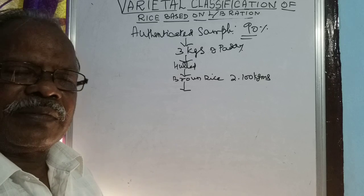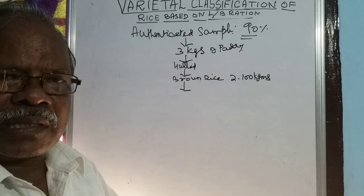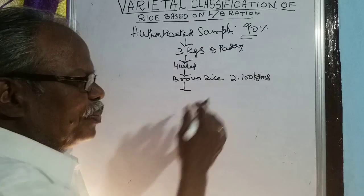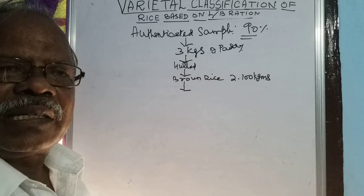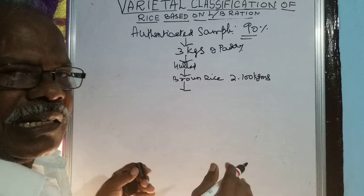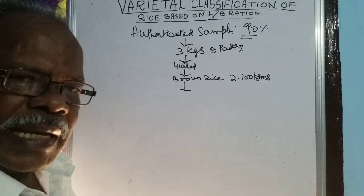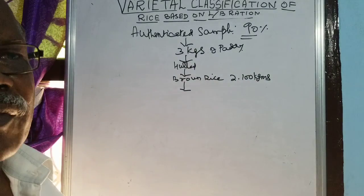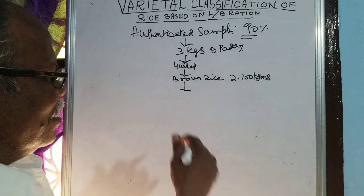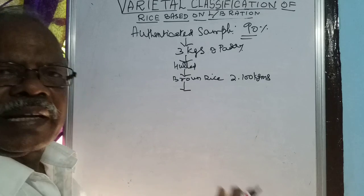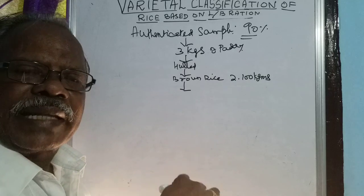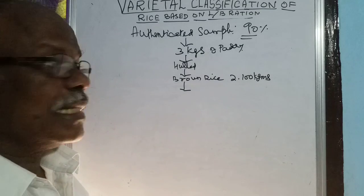A sample divider is a device which divides the sample equally in all its fractions. It will divide into two halves — if you put 2,100 grams, it will make 1,050 grams in each part. Again dividing 1 kg gives approximately 500 grams. This way we obtain a 500-gram resultant sample for analysis.